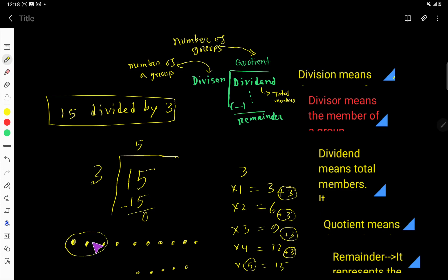So let us build a group. So 1 group you are getting, then 2 groups, then 3 groups, then 4 groups, and here 5 groups. So you can make 5 groups. The answer is 5.